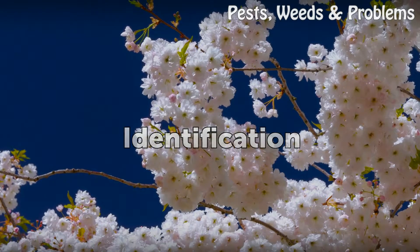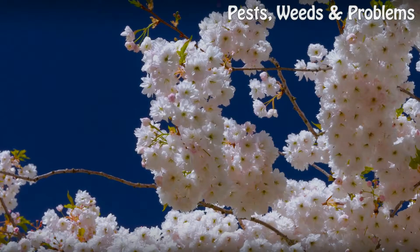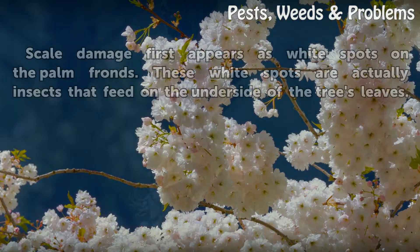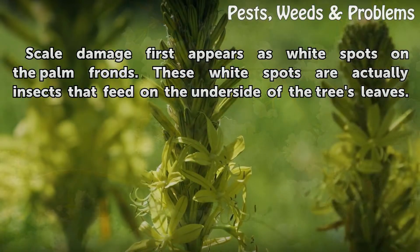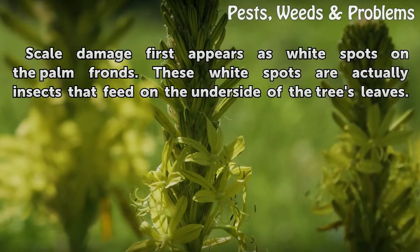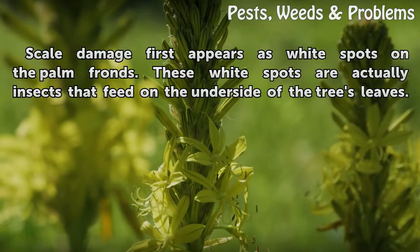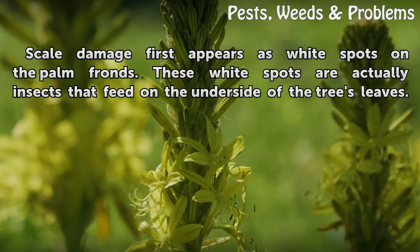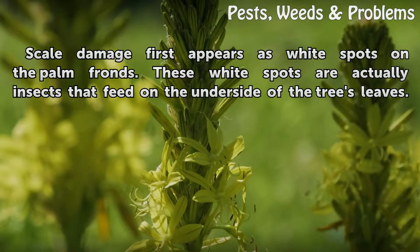Identification. Scale damage first appears as white spots on the palm fronds. These white spots are actually insects that feed on the underside of the tree's leaves.